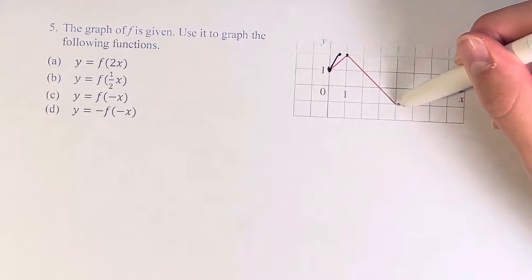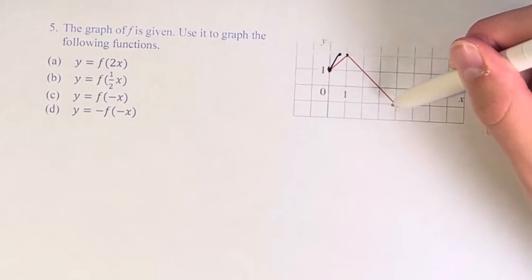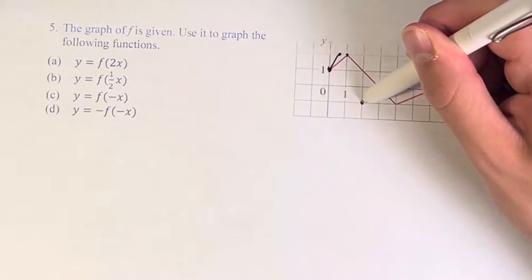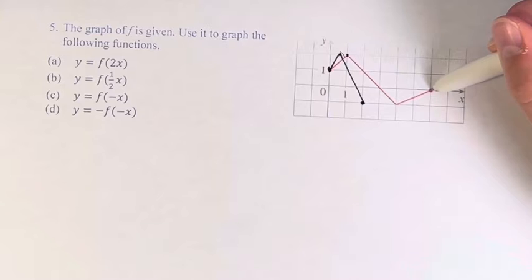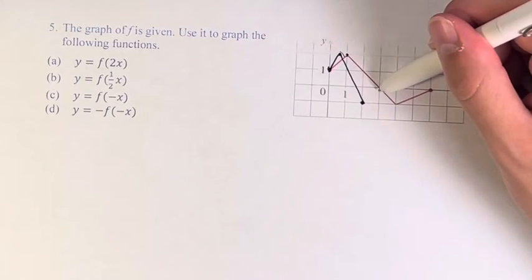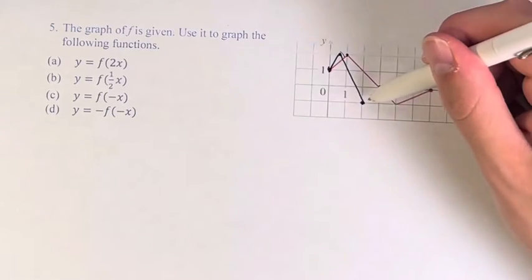You have this point down here. Its y value stays the same but its x value goes from 4 to 2. So it'll look something like this. And then this point has a y value of 0 and that stays the same but x value gets shrunk in half to look like that at 3.